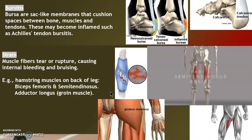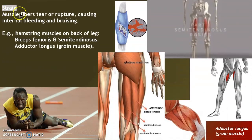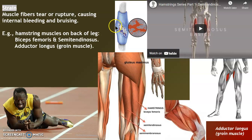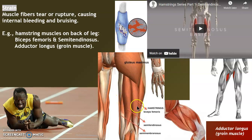A strain sounds almost like a sprain — but a sprain is a ligament and a strain is a muscle. There are different grades of strain: one, two, three, and four. Some are so bad you can't stand up; others are just a little annoying pain. Common locations for strains are the hamstrings.